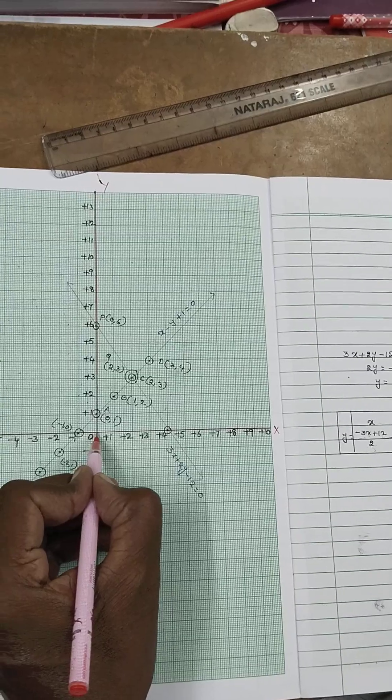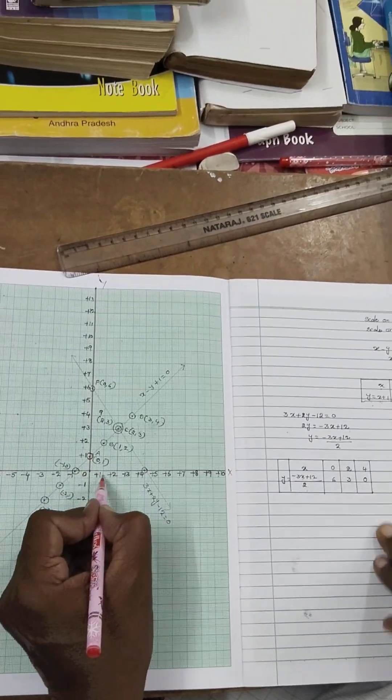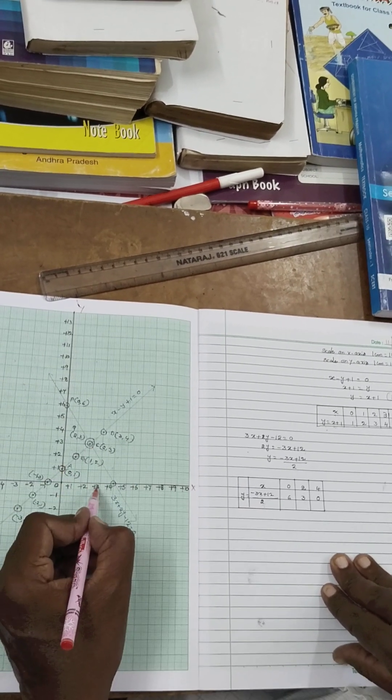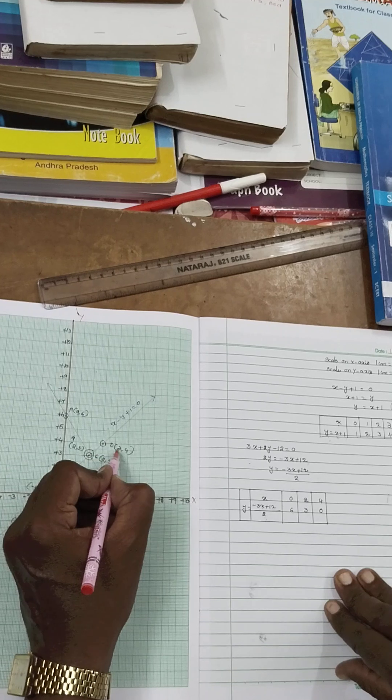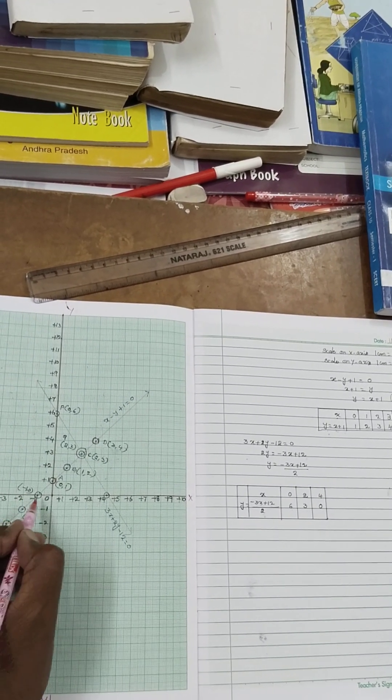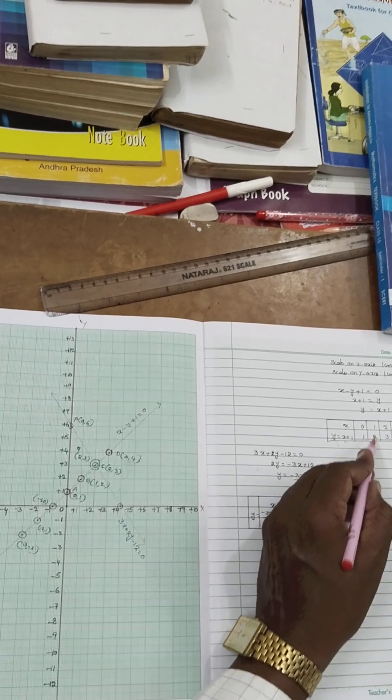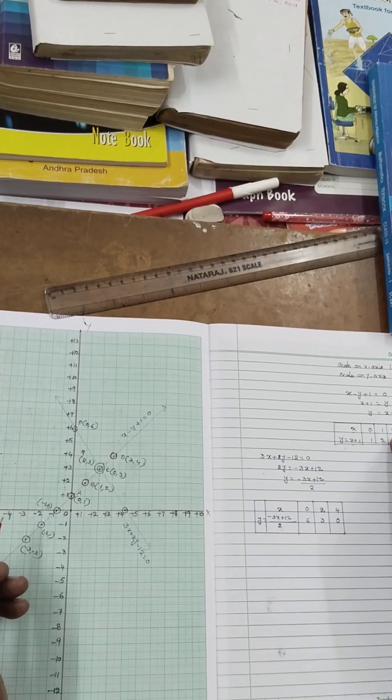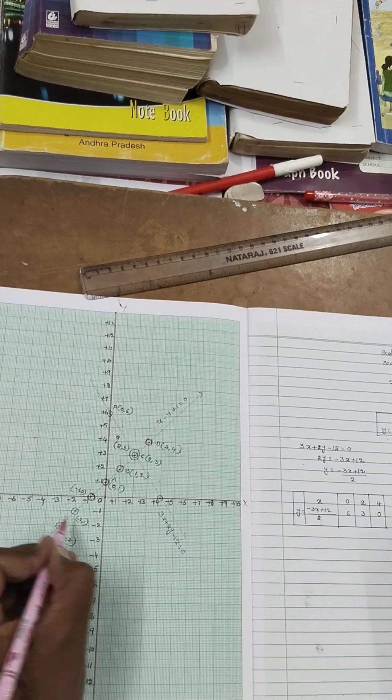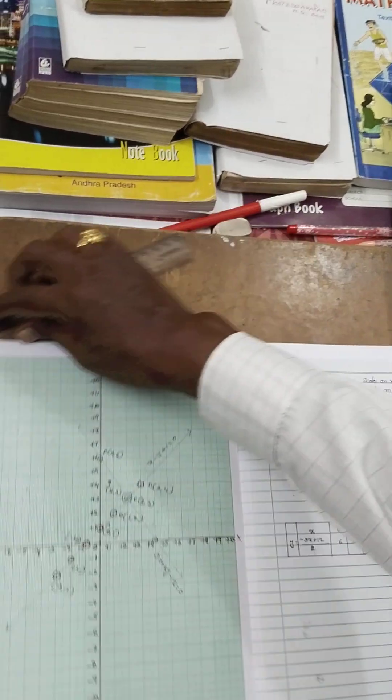First one you have to take 0, 0 means y is 1. And 1, 2. And 3, 3 comma 4. Next one minus 1, minus 1, 0. This one. Minus 2, minus 1. This one. Minus 3, minus 2. This one. And join these points.